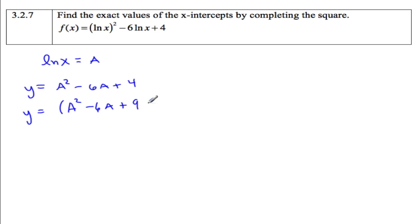So that's plus 9. So there's our square. Complete the square. I already have plus 4, but I can't just add 9. That would change the whole problem, so I need to subtract 9 as well. So now y equals a minus half of this, 3, squared. 4 minus 9 is minus 5.